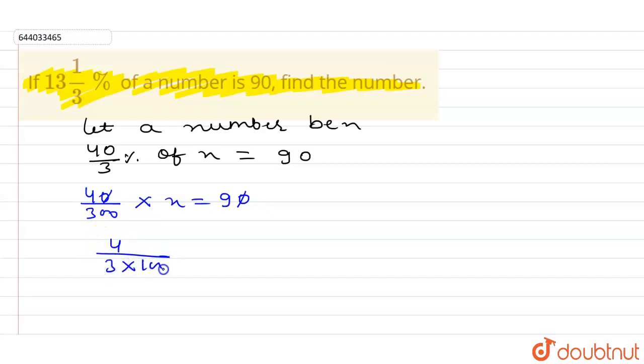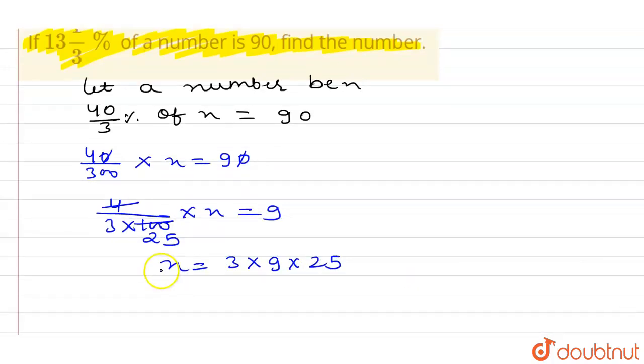Solving for x, we get x equals 3 times 9 times 25. This can be written as 27 times 25.